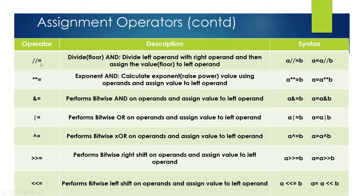There is a concept of floor and ceiling. For example, if a number is 2.1, the floor value is 2. If the number is 2.9, the ceiling would be 3. We'll see more in the demo. Assignment operators all use equal to — you can write them in the long form or the short form.